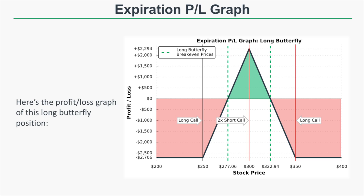The most we can lose on this trade is the debit paid of $27.06 times 100, which is $2,706. The most we can make is the width of the long call spread — $300 minus $250, or $50 — minus the debit of $27.06, times 100, which comes out to $2,294. The maximum profit occurs when the stock price is right at the short call strike price of $300.